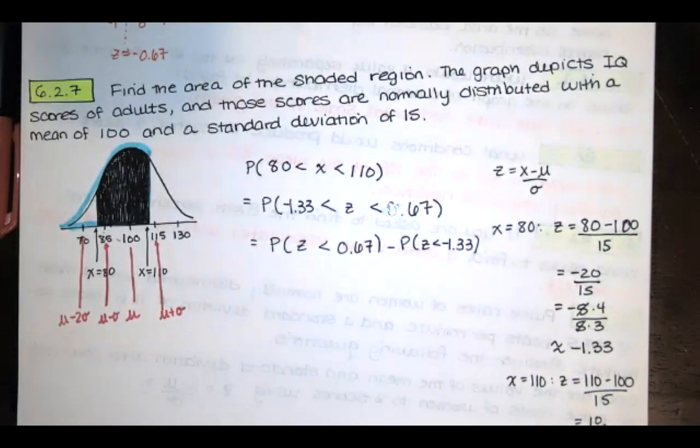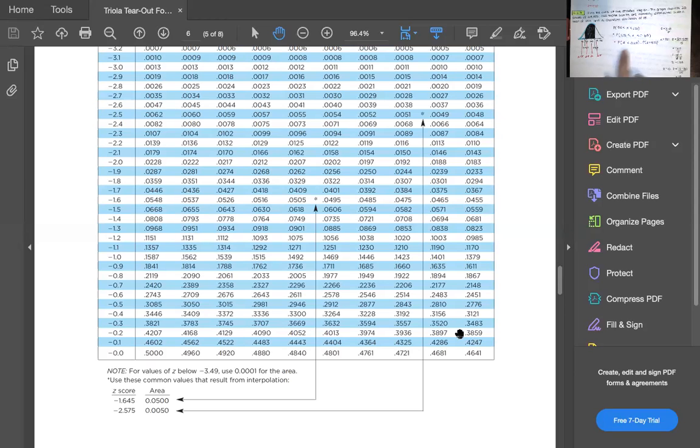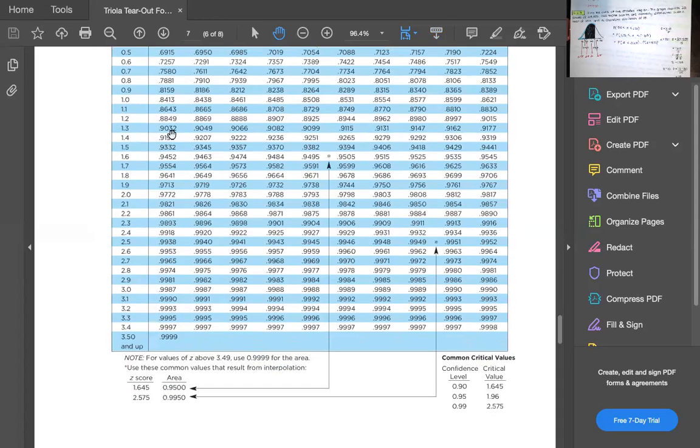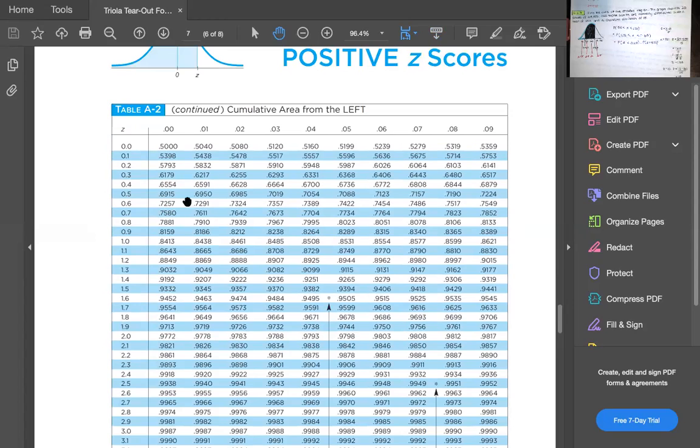We can use our table. We can also use Excel. I think I'll do both this time so that I can show you and remind you how to use Excel to find these values. So let's go to our table. I want z to be less than 0.67 and these are negative z values over here. So I want to go to the positive z values page. And I'm looking for 0.67. So I go to 0.6. That's 0.60, 61, 62, 63, 64, 65, 66, and 67. So that area is right there. So that area to the left of z equals 0.67 happens to be 0.7486.